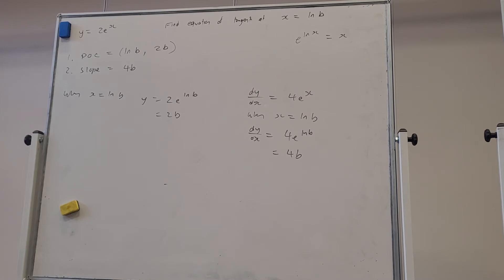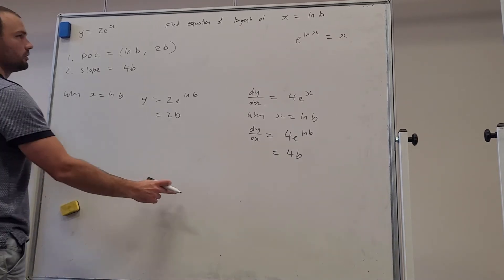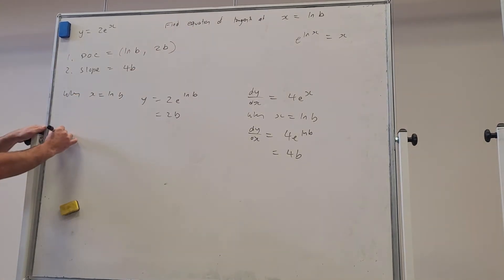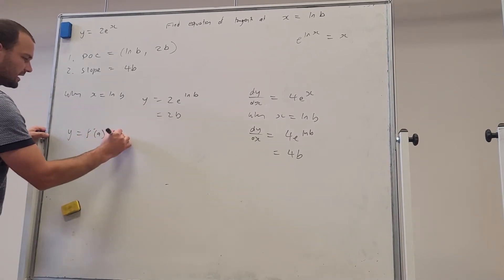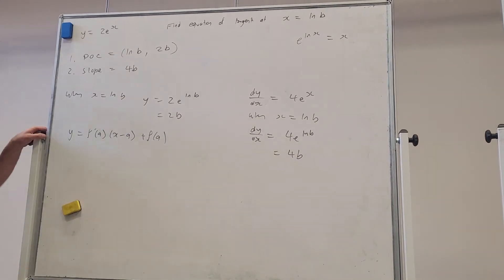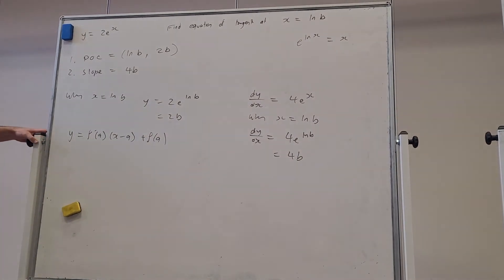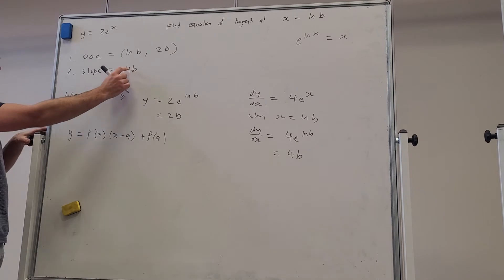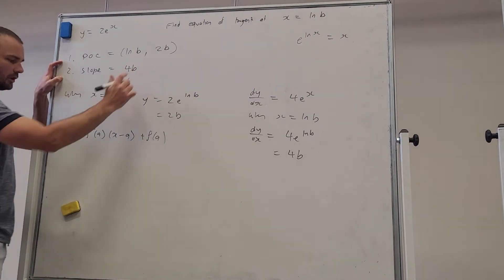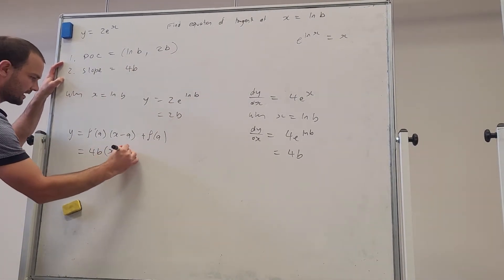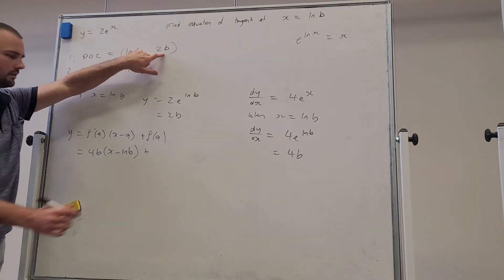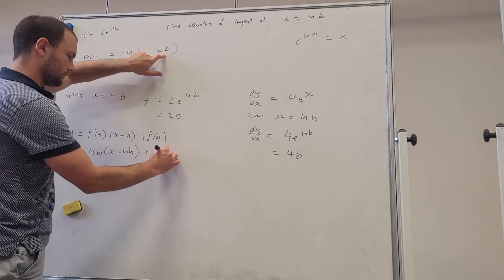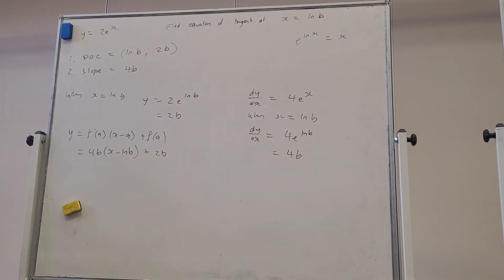And then let's just use the formula. So we're finding the equation of the tangent. The formula for the tangent is the line: y = f'(a)(x - a) + f(a), where a is the x value of the tangent. So that's going to be, this is f'(a) here, our slope. So we've got 4b times (x - ln b) plus the y value when x is ln b.